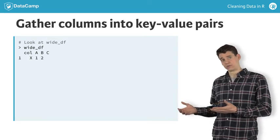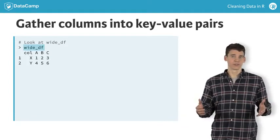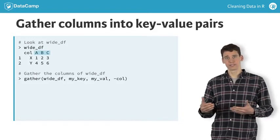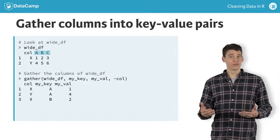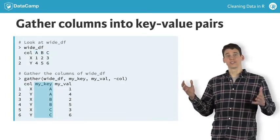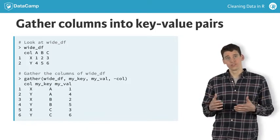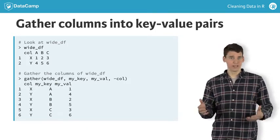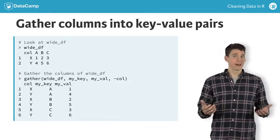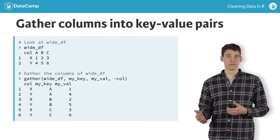In this first example, we start with a wide data set called wide_df. We wish to make it long by turning the column names A, B, and C into values of a new variable called myKey using the gather function. No information is lost in this process. We still have a value for each combination of X and Y with A, B, and C, but these values are now represented vertically in the column we've labeled myVal.